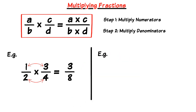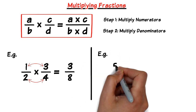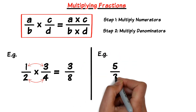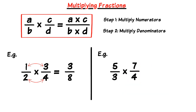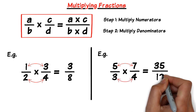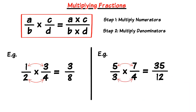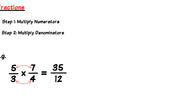Let's take a look at another example using improper fractions this time: 5 over 3 times 7 over 4. Multiplying the numerators we have 5 times 7 equals 35, then multiplying the denominators we have 3 times 4 which is 12. So the new fraction becomes 35 over 12.